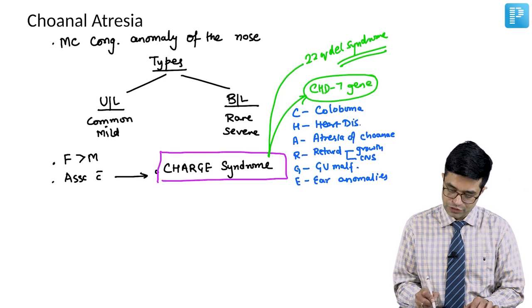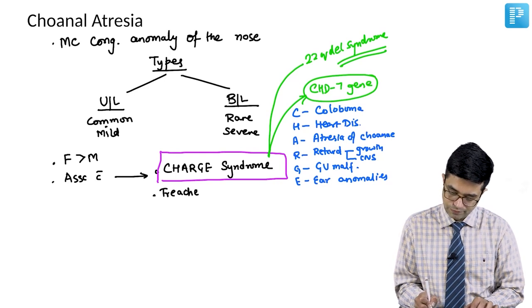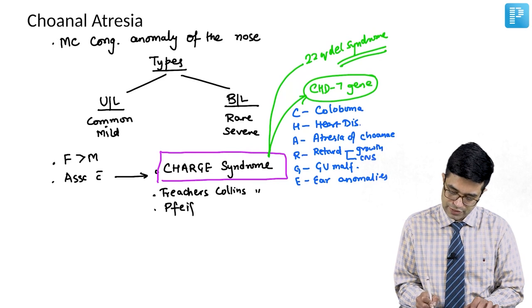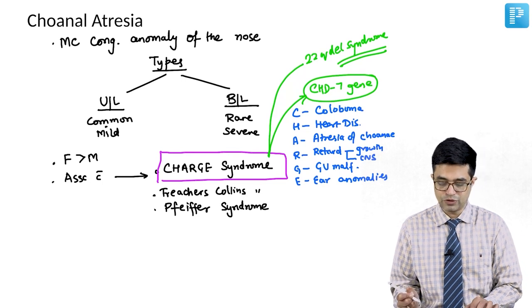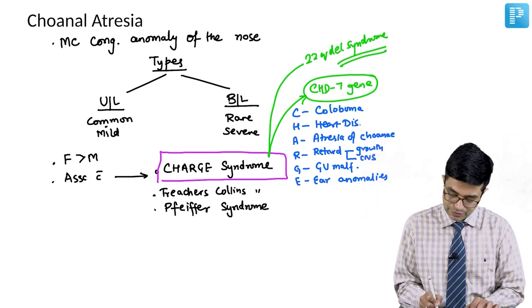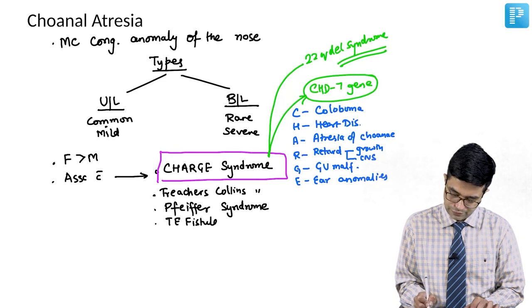Other syndromes associated with choanal atresia include Treacher Collins syndrome and Pfeiffer syndrome. There is a large list, but these are the important ones to remember. Some cases may also be associated with tracheoesophageal fistula, which is a relatively rare association.